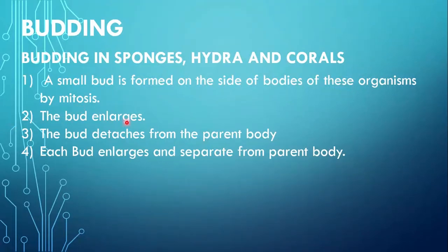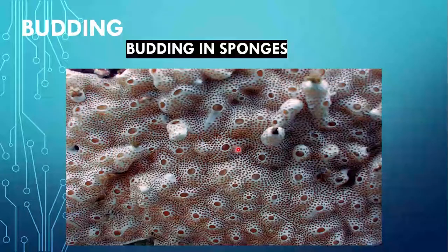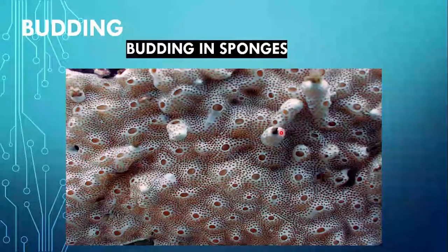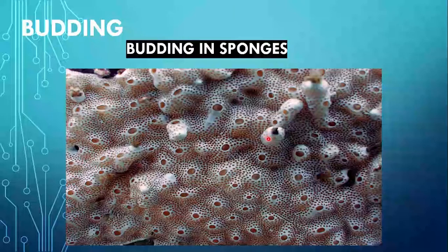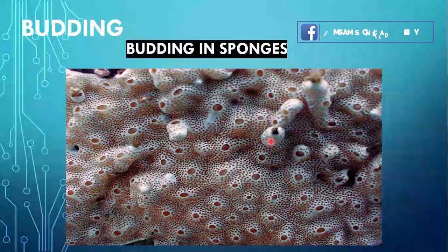Number 2: the bud enlarges. Number 3: the bud detaches from the parent body. Number 4: each bud enlarges and separates from the parent body. This diagram is showing us the budding in sponges. On the parent body of sponges, a small bud forms, then this bud grows and enlarges in size, and finally separates from the parent body, and from each bud a new sponge is formed.